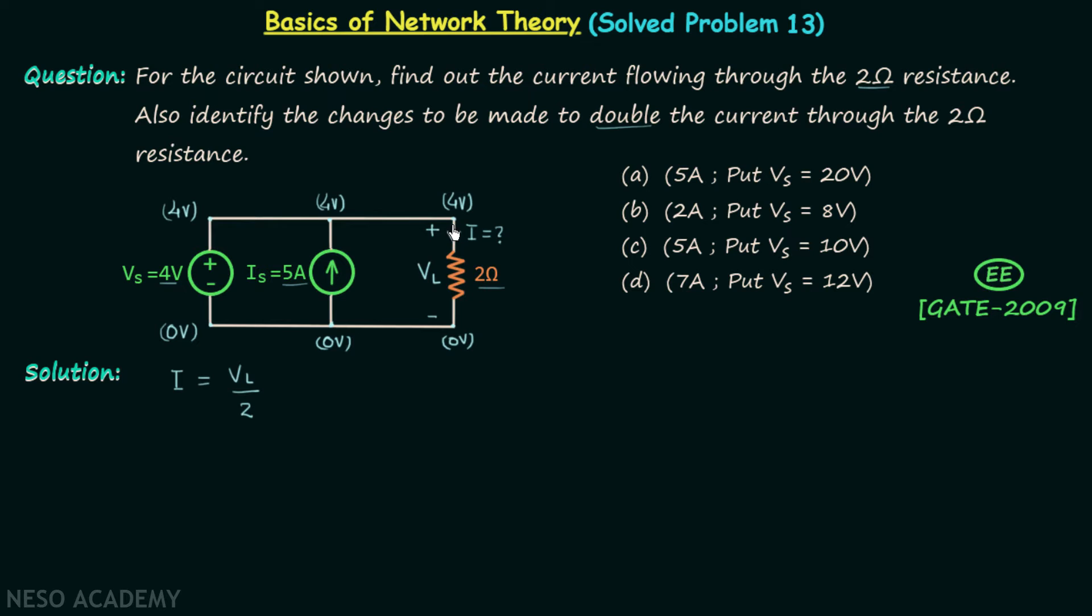Now look at the two points. You will find the potential difference is equal to four minus zero, that is four volts. So the voltage across the resistor is equal to four volts and therefore current I will be equal to four divided by two which is two amperes.